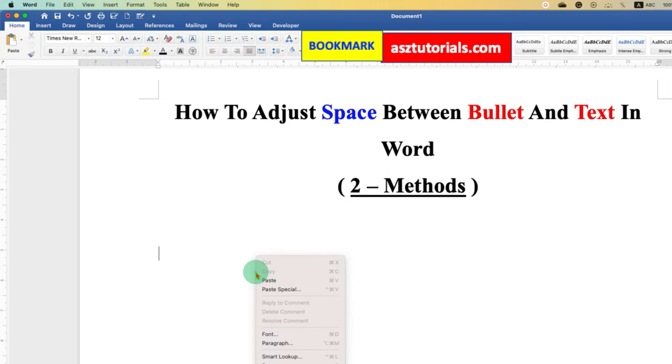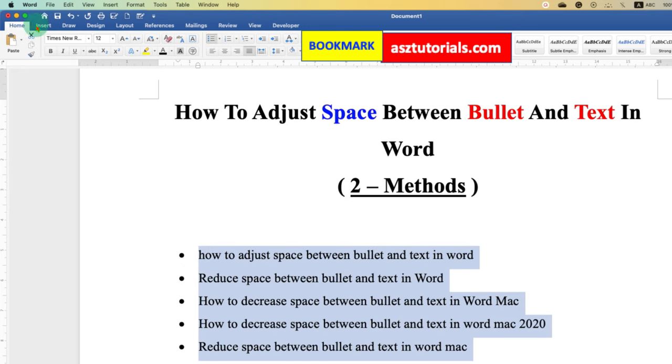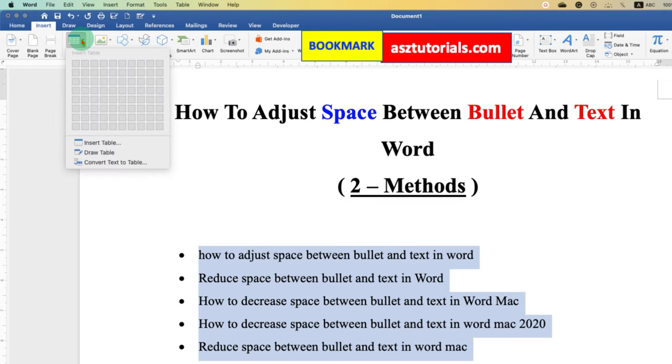The second method is also easy. Just paste the text. Select the text. Give bullet points. And now, go to the insert tab. Click on table drop down and select the option insert table.